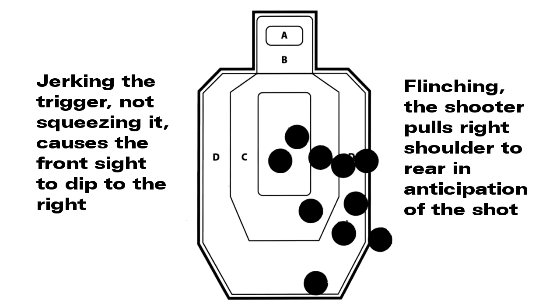Sample target number ten. Probable causes: number one, jerking the trigger not squeezing it, causing the front sight to dip to the right.